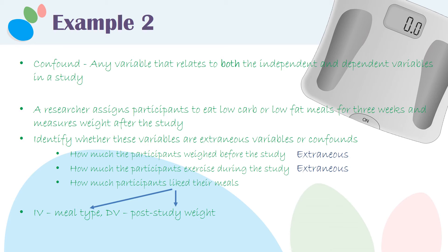Lastly, let's talk about how much the participants like their meals. Is that going to be related to meal type? Maybe — it might be that most people prefer a low-carb meal rather than a low-fat meal. So even though you're randomly assigning people to eat a low-carb or a low-fat meal, you're also randomly assigning people to whether they like what they're eating or not.